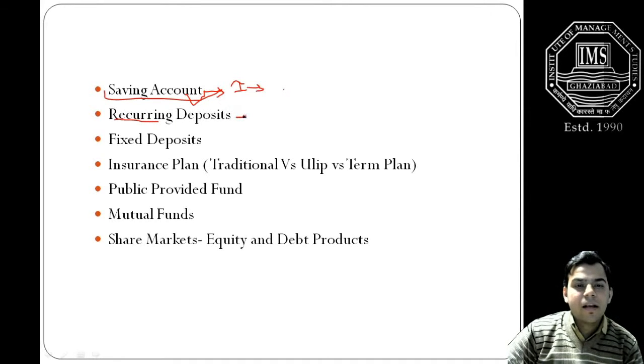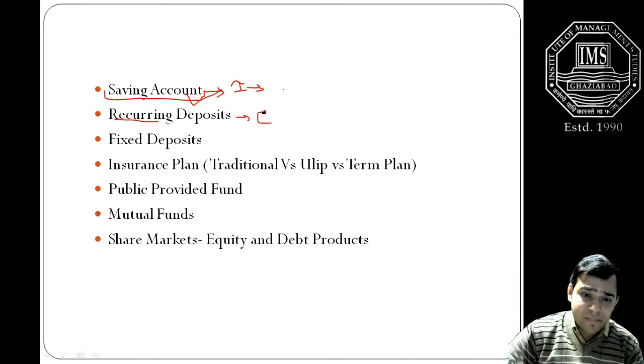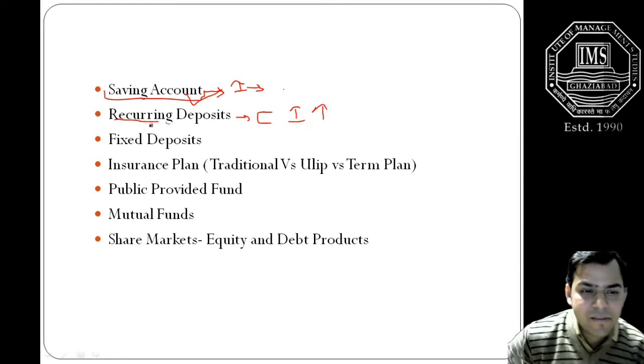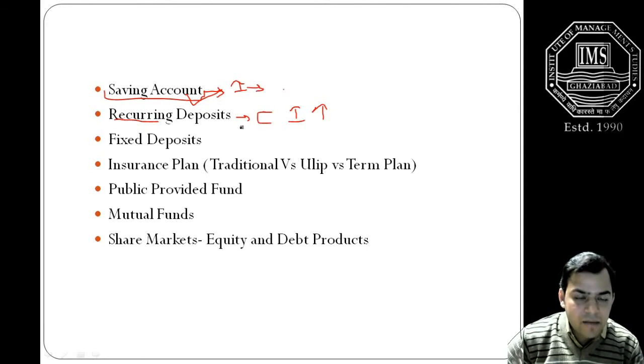But the benefit you are going to get from the recurring deposits is the compounding. Compounding is basically the factor. Suppose if you are having a deposit on a monthly basis, so month after month the principal amount changes and you have got more potential to earn higher interest in comparison to the saving account.